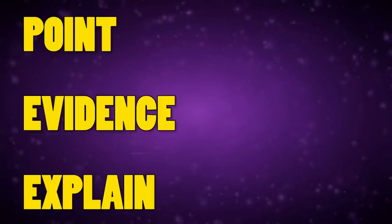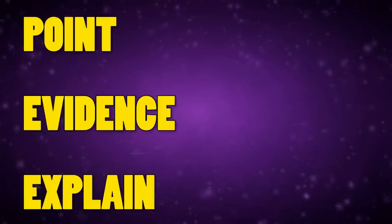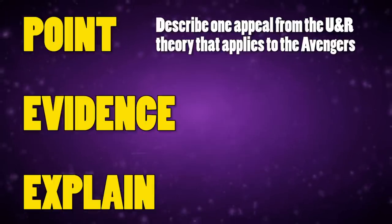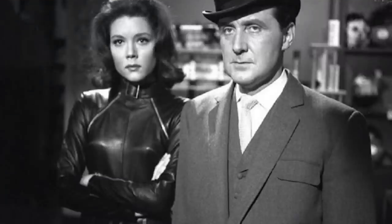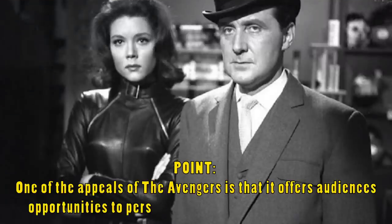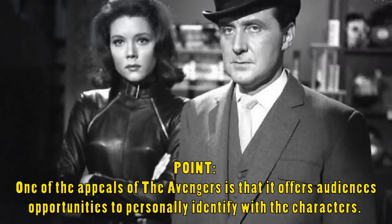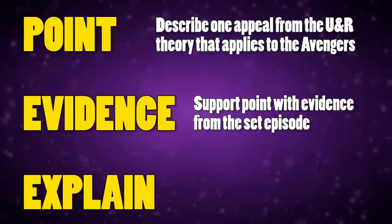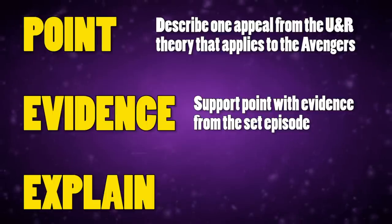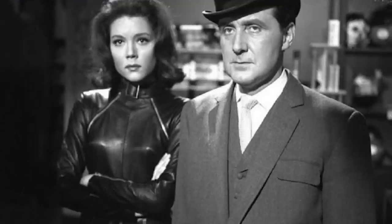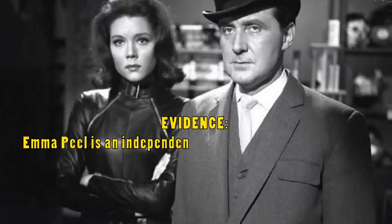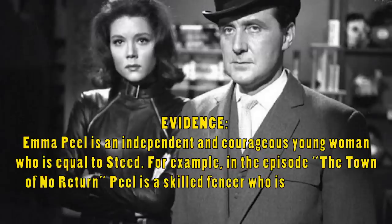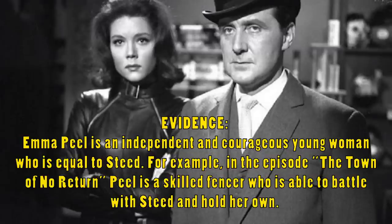You only need to choose two or three appeals in order to write a decent answer. To write out your response you could use the PEE technique to get you started. Firstly, write a point to suggest which appeal from the uses and gratification theory audiences are likely to get from the Avengers — for example: 'One of the appeals of the Avengers is that it offers audiences an opportunity to personally identify with the characters.' Next, support your point with evidence from the program, which can be from any part of the episode, not just the clip shown in the exam: 'Emma Peel is an independent and courageous young woman who is equal to Steed. For example, in the episode Town of No Return, Peel is a skilled fencer who is able to battle with Steed and hold her own.'